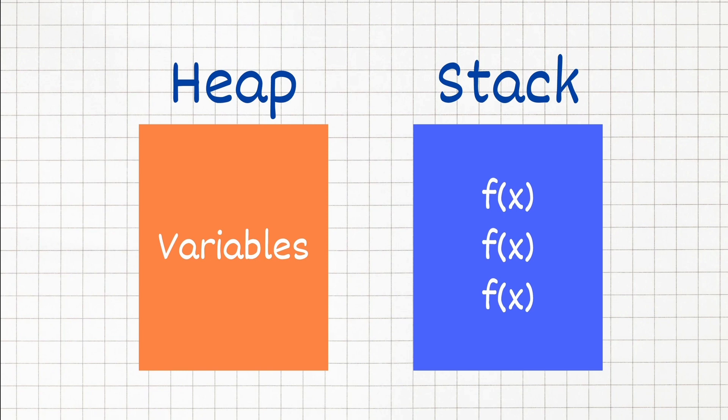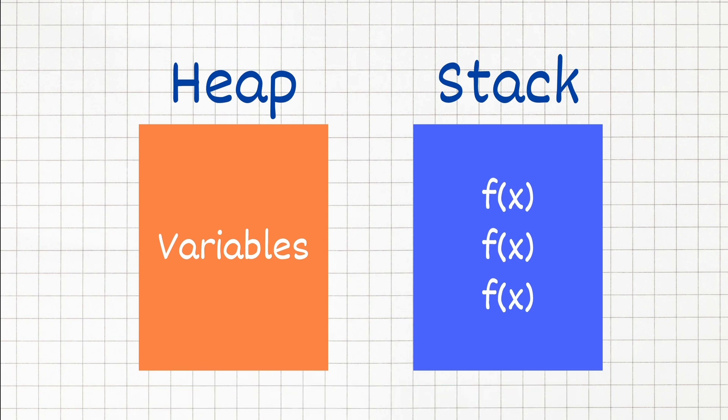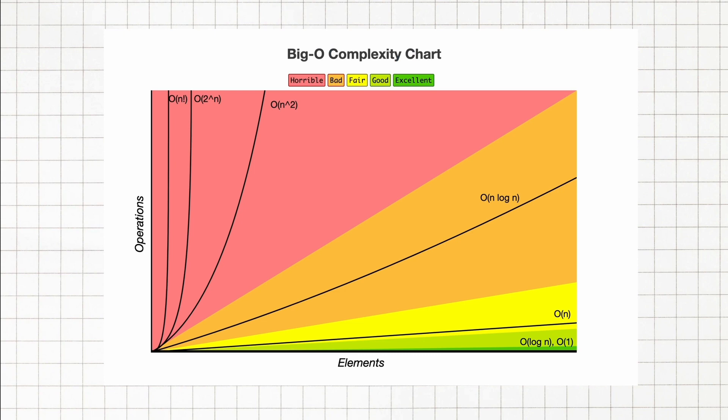Sometimes we want to optimize for using less memory instead of using less time. Talking about memory or space complexity is very similar to talking about time complexity. We simply look at the total size relative to the size of the input and see how many new variables or new memory we are allocating.